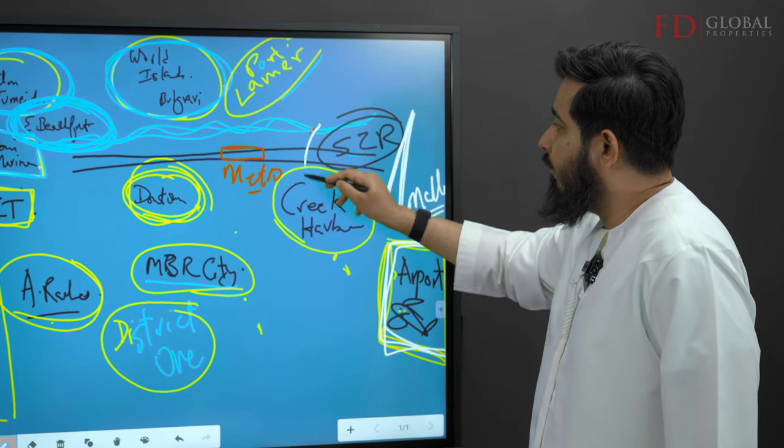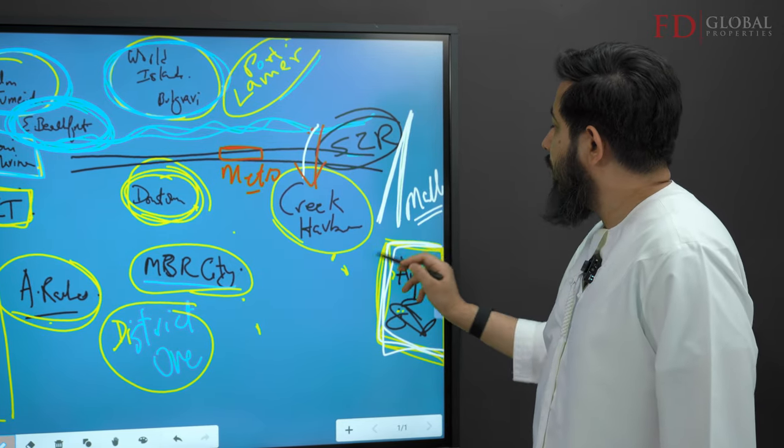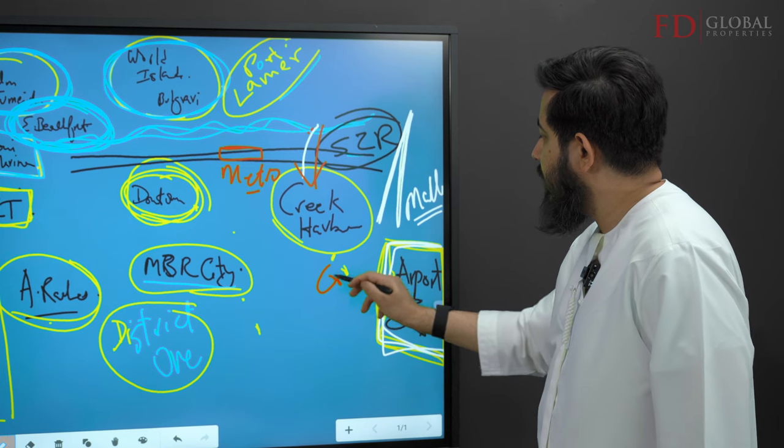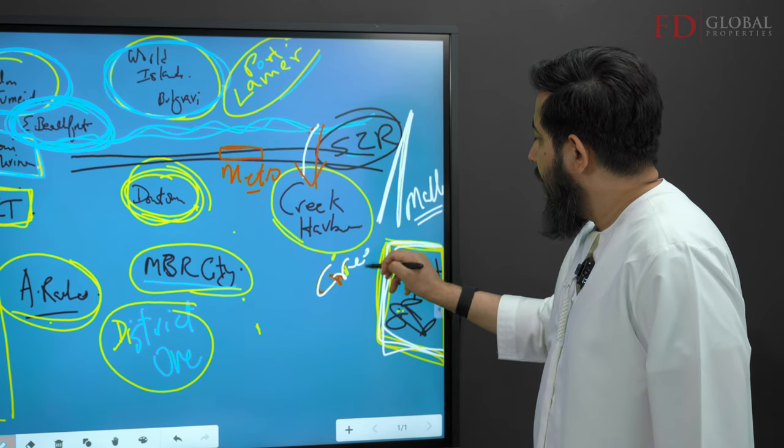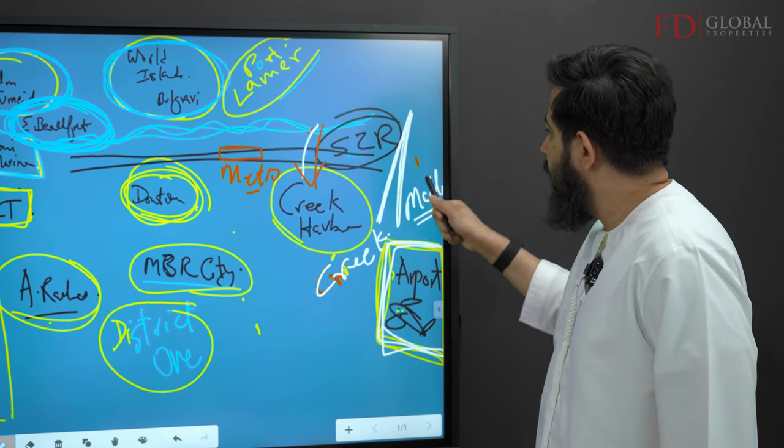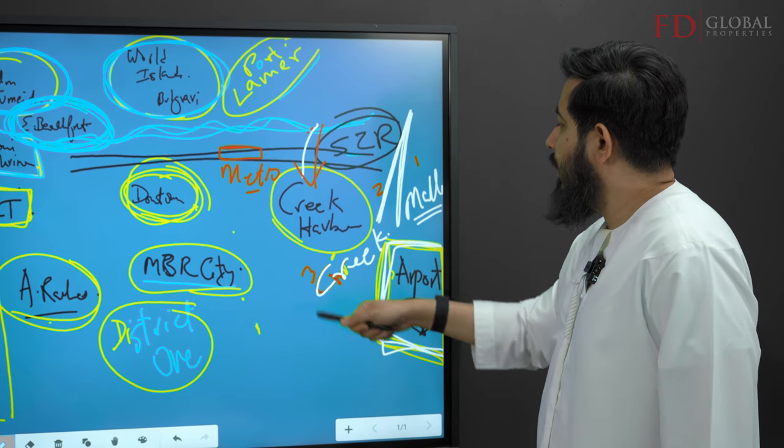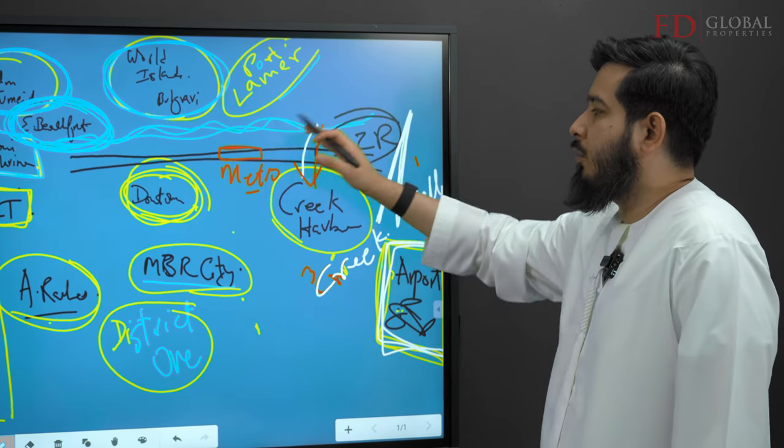And then this waterway actually flows into it, so it's got a creek as well. So it's got three landmarks: one, two, three, apart from a few others because it's close to the metro station and so on and so forth.